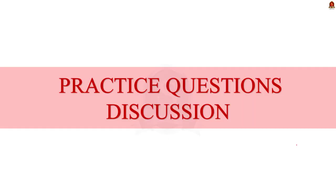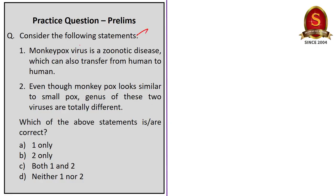That is to discuss preliminary practice questions. Now look at this first question. Consider the following statements. Monkeypox virus is a zoonotic disease which can also transfer from human to human. Here the statement 1 is correct. Yes, it is a zoonotic disease which also transfers from human to human. Now let's take second statement. Even though monkeypox looks similar to smallpox, genus of these two viruses are totally different. Here the statement 2 is incorrect because both the monkeypox and smallpox belong to the same genus called orthopox virus. The answer for the question is option A, one only.